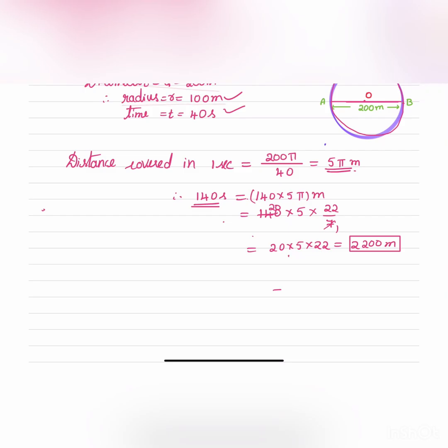Now this 2200 meters will be equal to how many rounds? So therefore the number of rounds will be equal to 140 by 40, that is 3.5 rounds. So 140 seconds by 40 seconds, it will be 3.5 rounds.